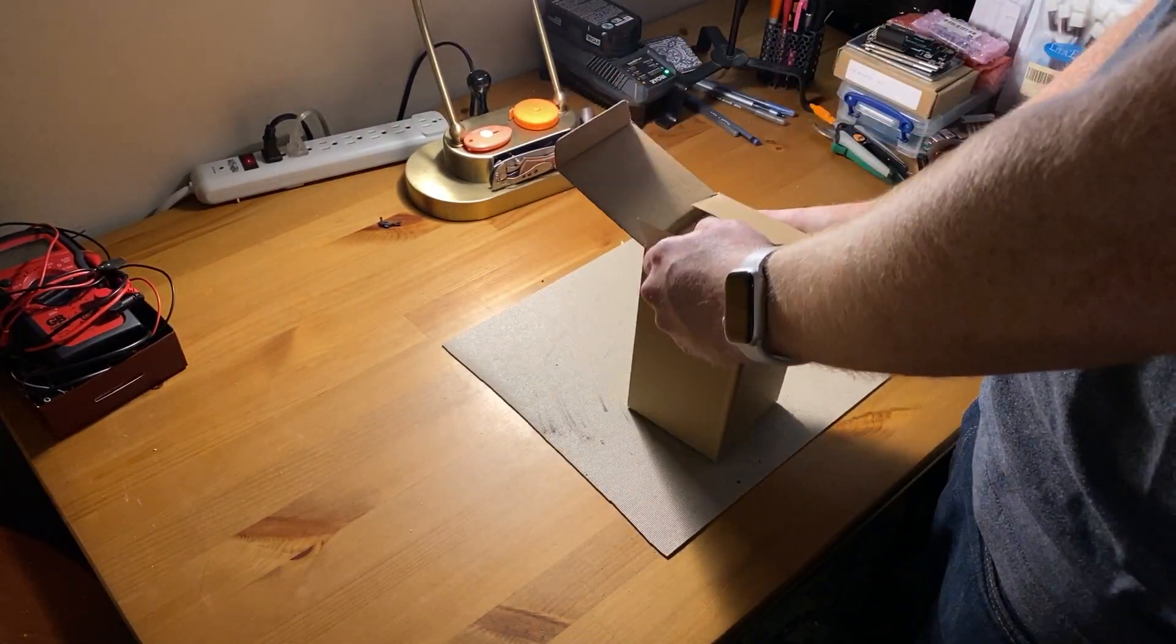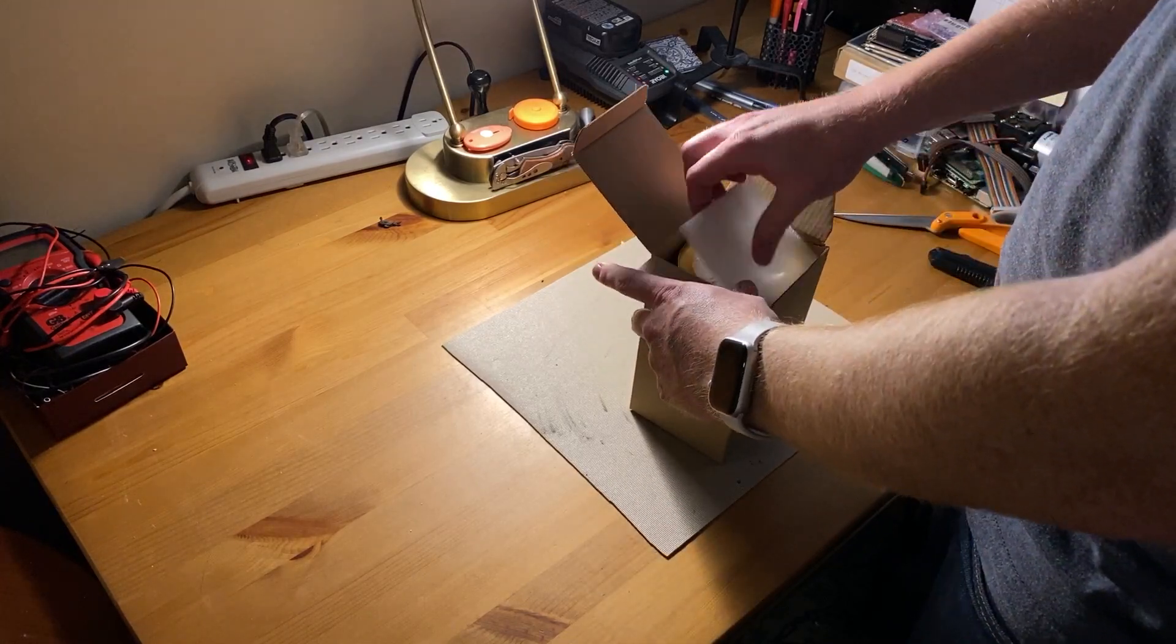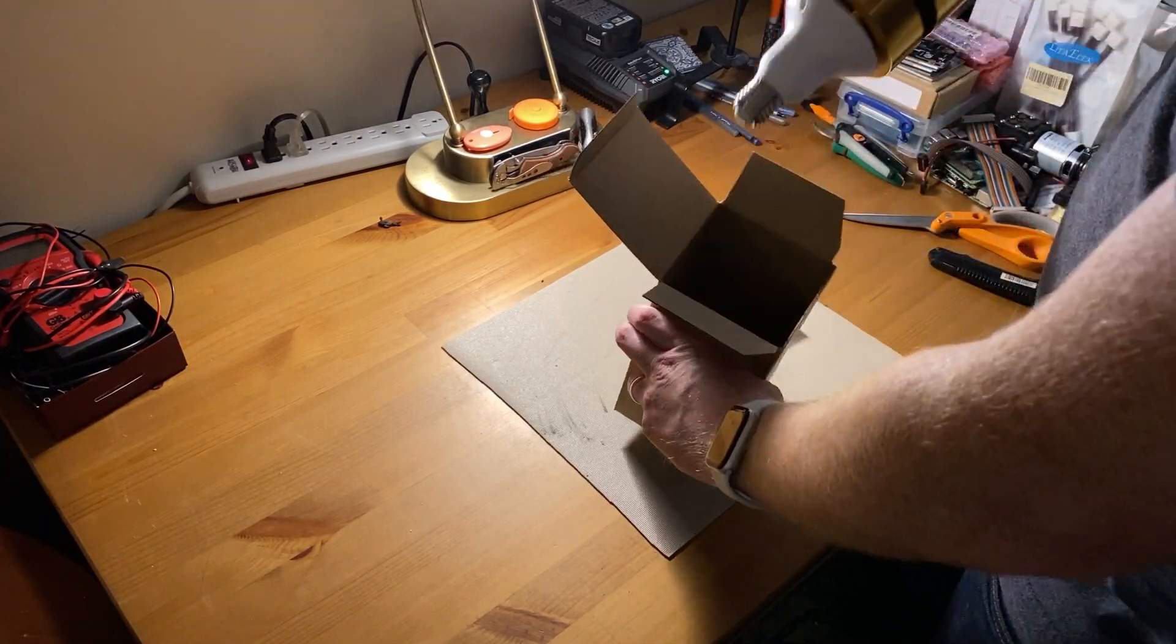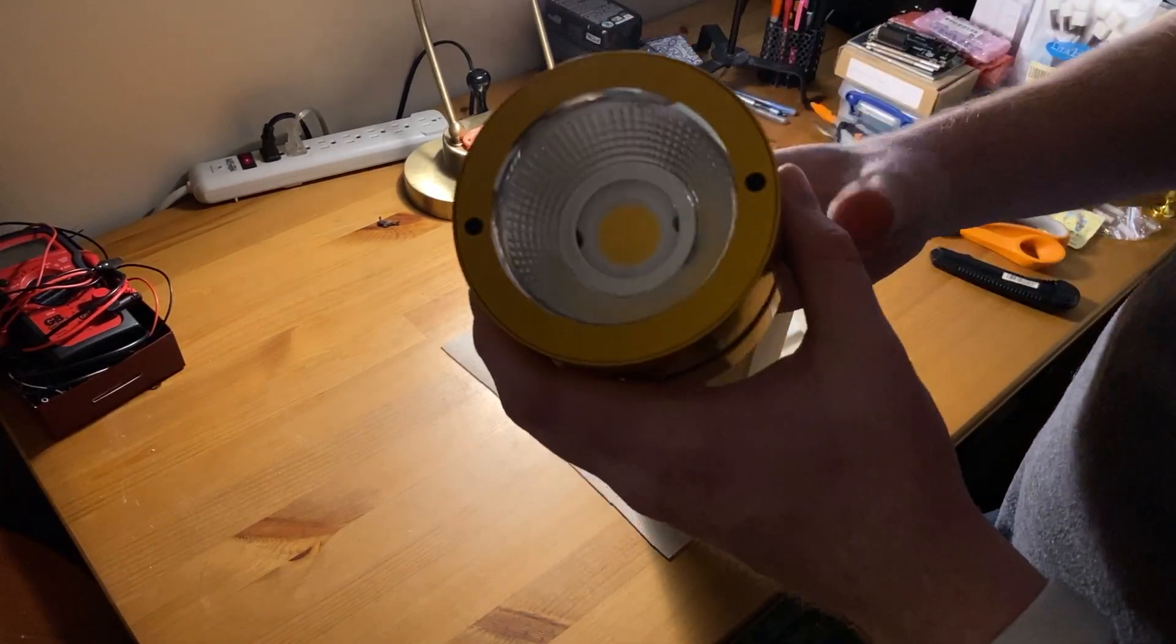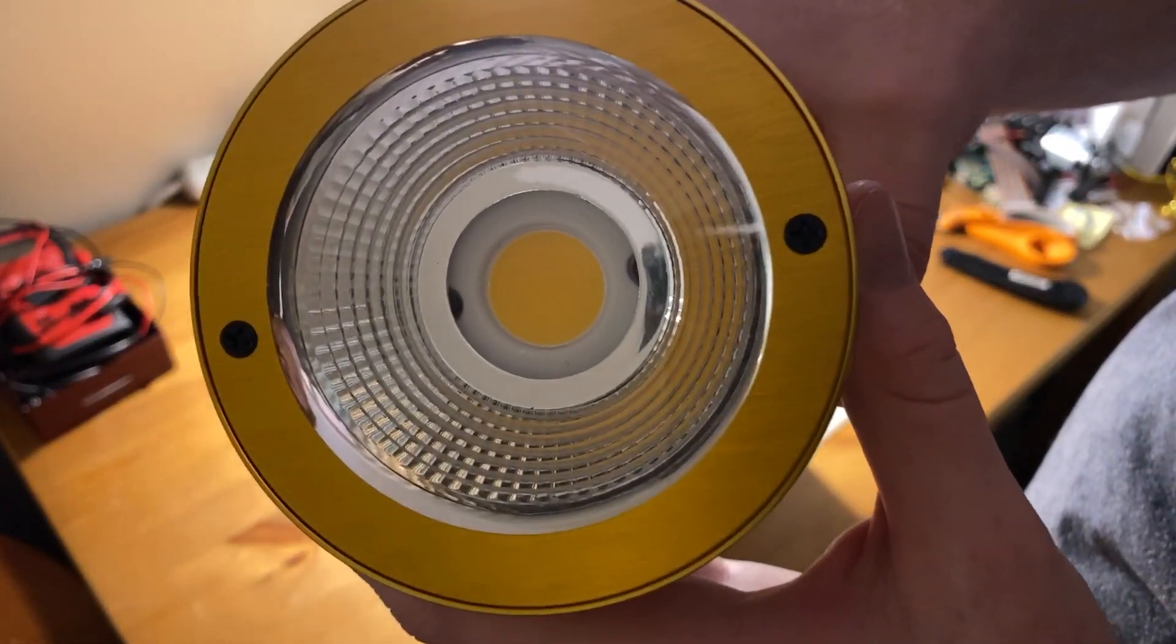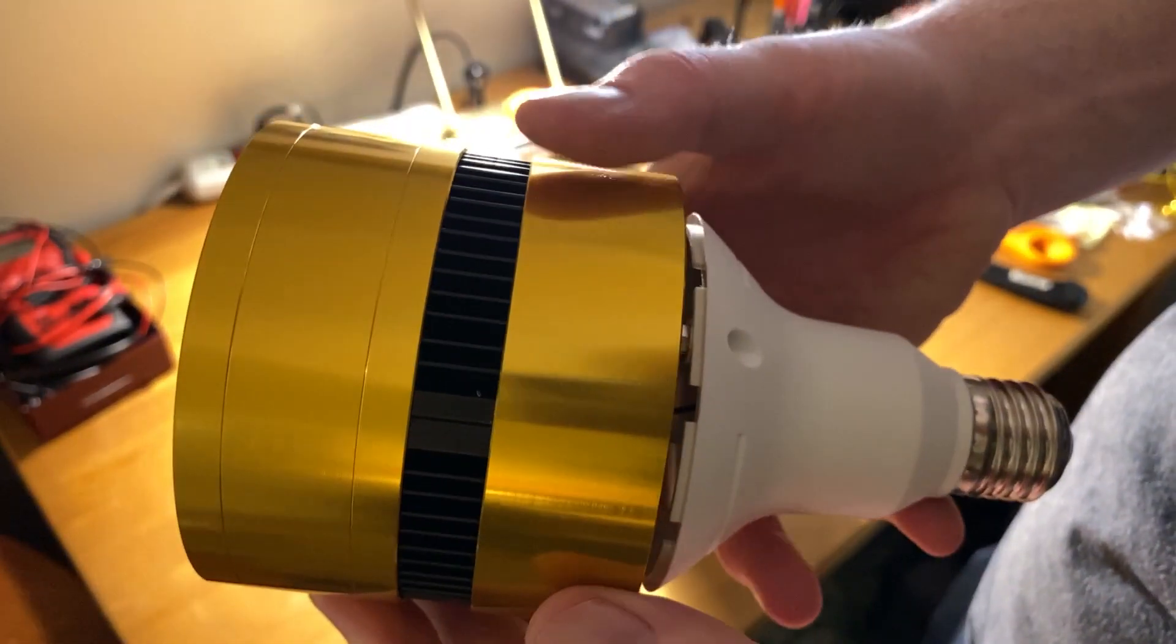Comes in a pretty small box. Once you open it, you can find the light itself. You can see the Cobb LED there and the aluminum reflector.